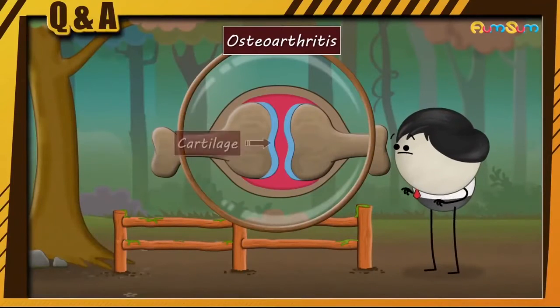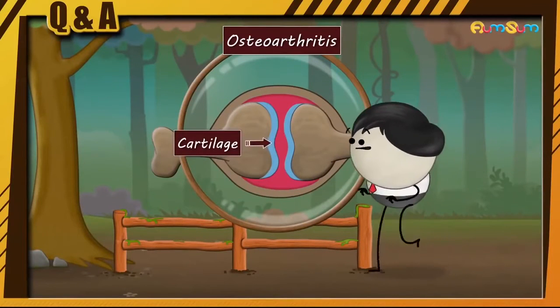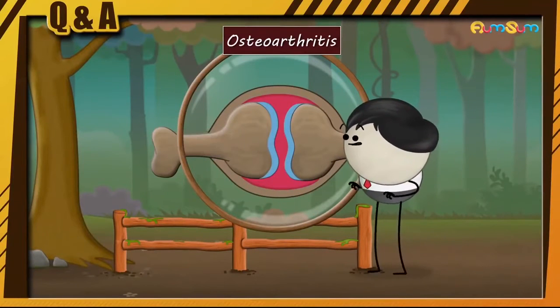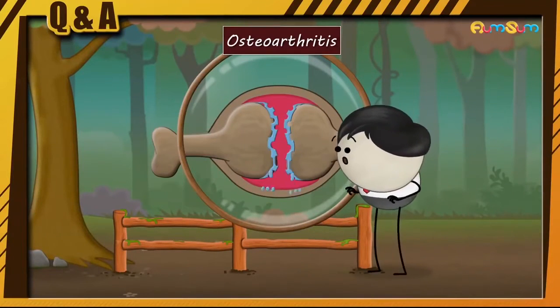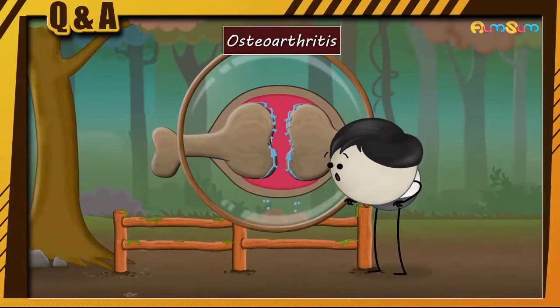Osteoarthritis occurs when the cartilage that cushions the ends of bones in a joint gradually breaks down and wears away.